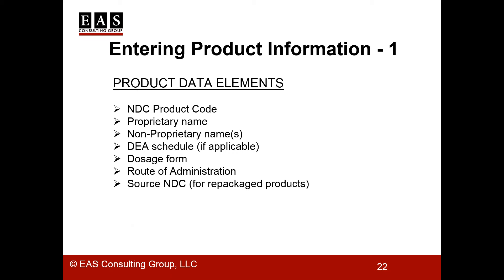The first section of the listing deals with product data elements: your NDC product code, a proprietary name such as Tylenol — or if you don't have a trade name, just Pain Reliever — and your non-proprietary name, which is the name of the active ingredients. If it's a narcotic, you need to list the DEA schedule. You'll need to include information on the type of dosage form — whether it's a tablet, syrup, cream, ointment, or powder — the route of administration such as oral, topical, rectal, intravenous, or sublingual. And if it's a repackaged product, you also have to include the source NDC.